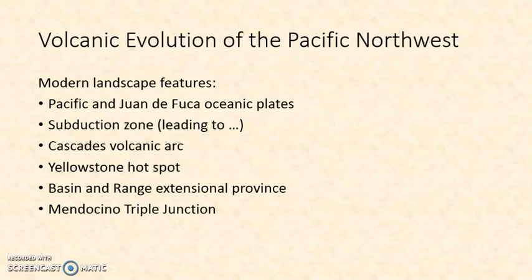The first minute or so of the video starts with a summary of the volcanic evolution of the Pacific Northwest and the tectonic settings. It shows the modern landscape features that should be pretty familiar to you already: the Pacific Ocean and the Juan de Fuca Oceanic Plate, the location of the subduction zone itself, leading to the Cascades Volcanic Arc.